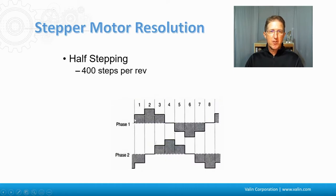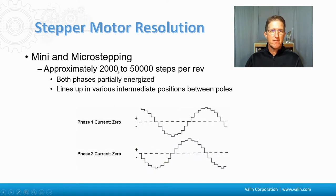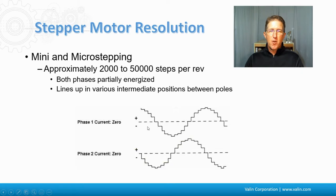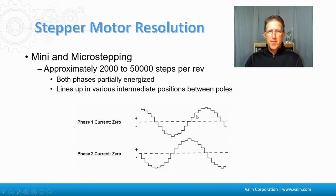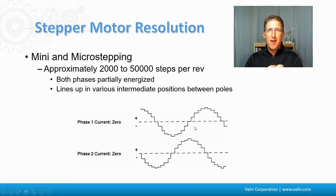Half-stepping takes it a little further, where a phase is turned halfway on, then all the way on, then halfway off, then off. Alternating that between the two phases gives you eight steps, so half-stepping gives 400 steps per revolution. Taking it further to mini-stepping, instead of 400 steps you divide into 2,000, each one a little smaller. Going even further gives micro-stepping, which has been around for decades. Both phases are partially energized and they line up in various intermediate positions between the poles, helping to manage resonance points and get smaller steps. However, you can't necessarily position to each tiny step because of the magnets and poles interacting, so you don't necessarily get the repeatability and accuracy of the full resolution.